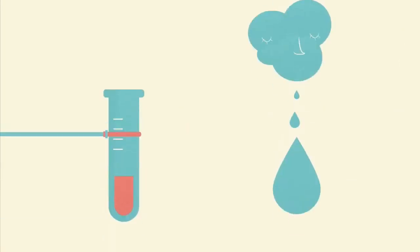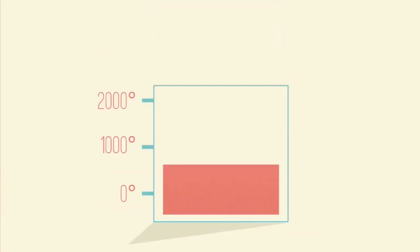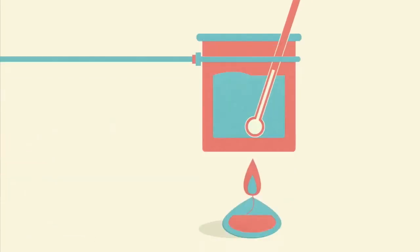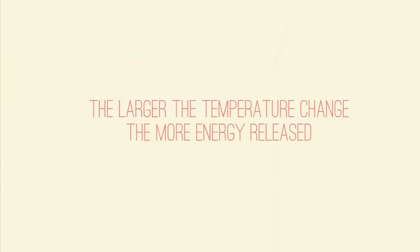In summary, calorimeters are devices that can measure the heat of chemical reactions, physical changes or heat capacities for different materials. A simple experiment showed how measuring the temperature change of water could be used for this purpose. The larger the temperature change per gram of fuel, the more energy released.